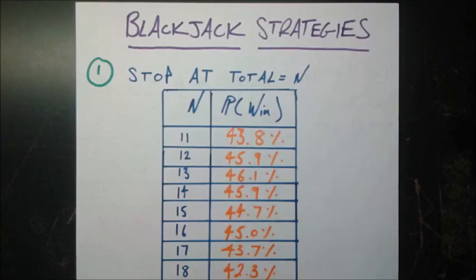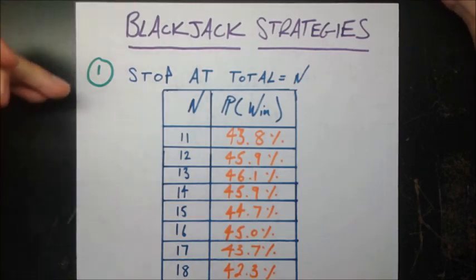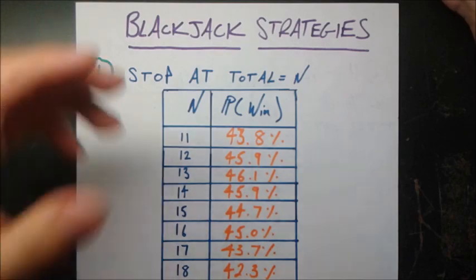In this video, we'll be looking at some simple types of blackjack strategies. They're simple in that the rules are very simple. For example, this first one, the rule is simply stop when the total of your cards is equal to n or more. And they're simple rules like that.